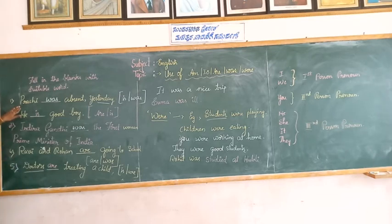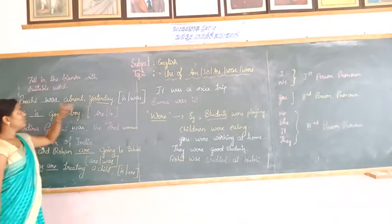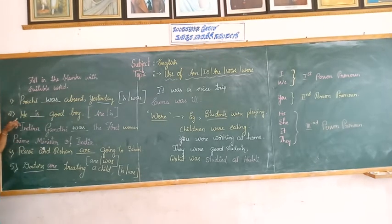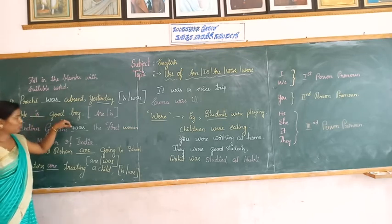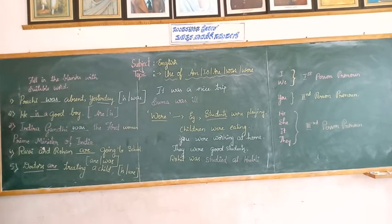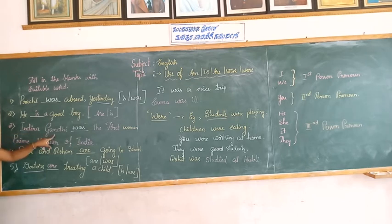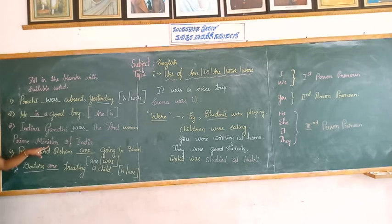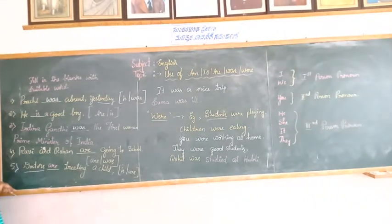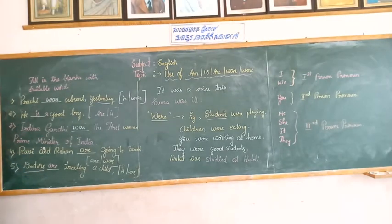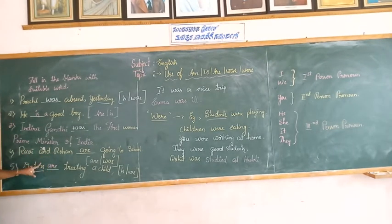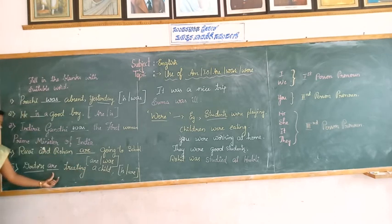Summary of answers: Prachi was absent yesterday — 'yesterday' refers to past tense and Prachi is singular, so we use 'was'. He is a good boy — 'he' is singular, so we use 'is'. Indira Gandhi was the first woman Prime Minister of India — singular subject, past tense, so 'was'. Ravi and Rohan are going to school — two members, plural, so 'are'. Doctors are treating a child — plural, so 'are'.